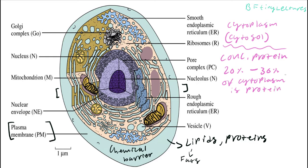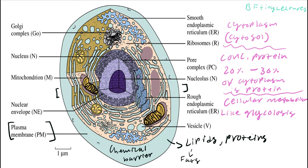The cytoplasm is organized and is a major site for cellular metabolism. The cytoplasm is useful for cellular metabolism — think of glycolysis, which is breaking down glucose to make energy. Within the plasma membrane, you're going to have a cytoplasm which is 20 to 30% protein, and it's useful for metabolic operations such as metabolizing glucose into energy.